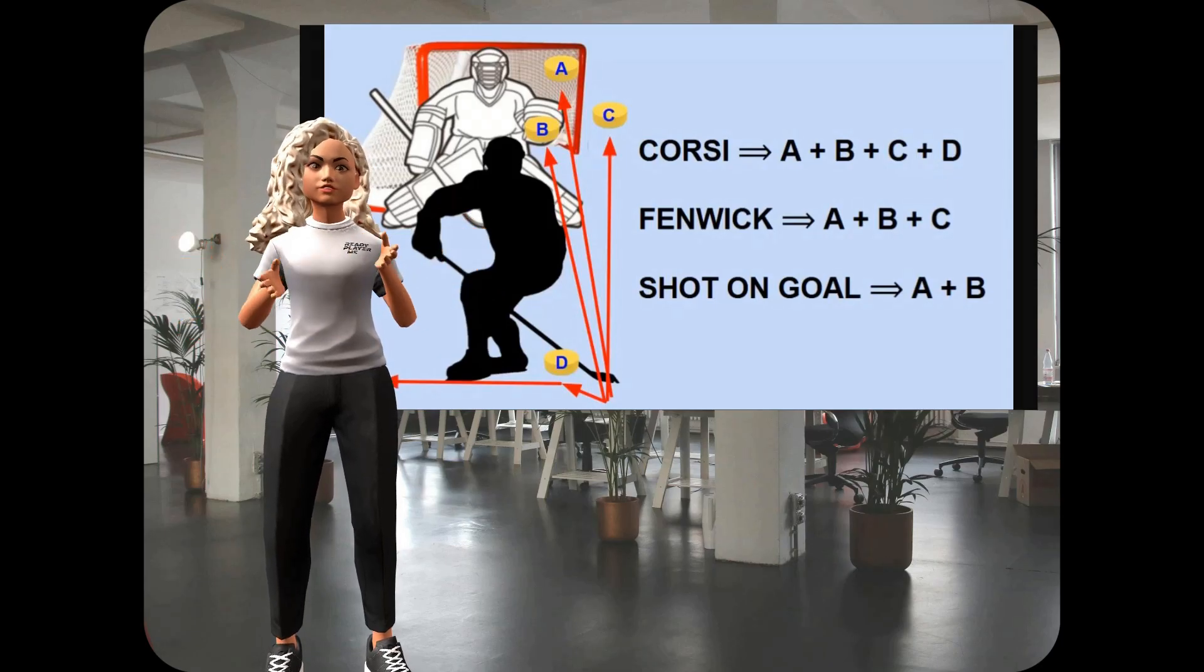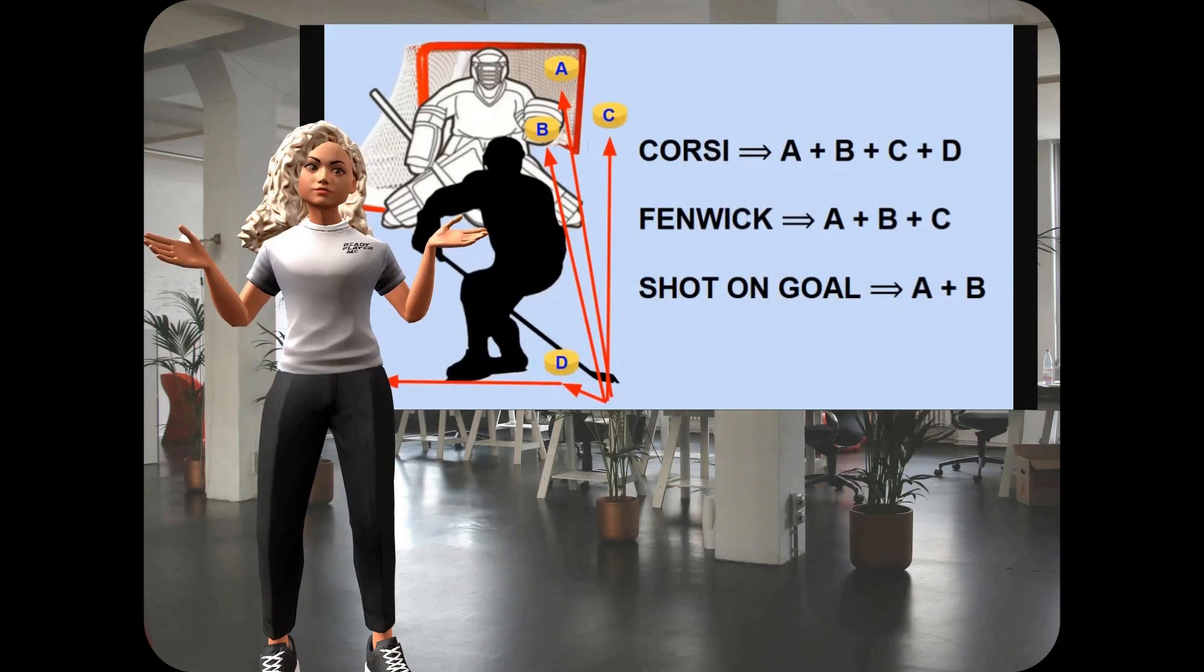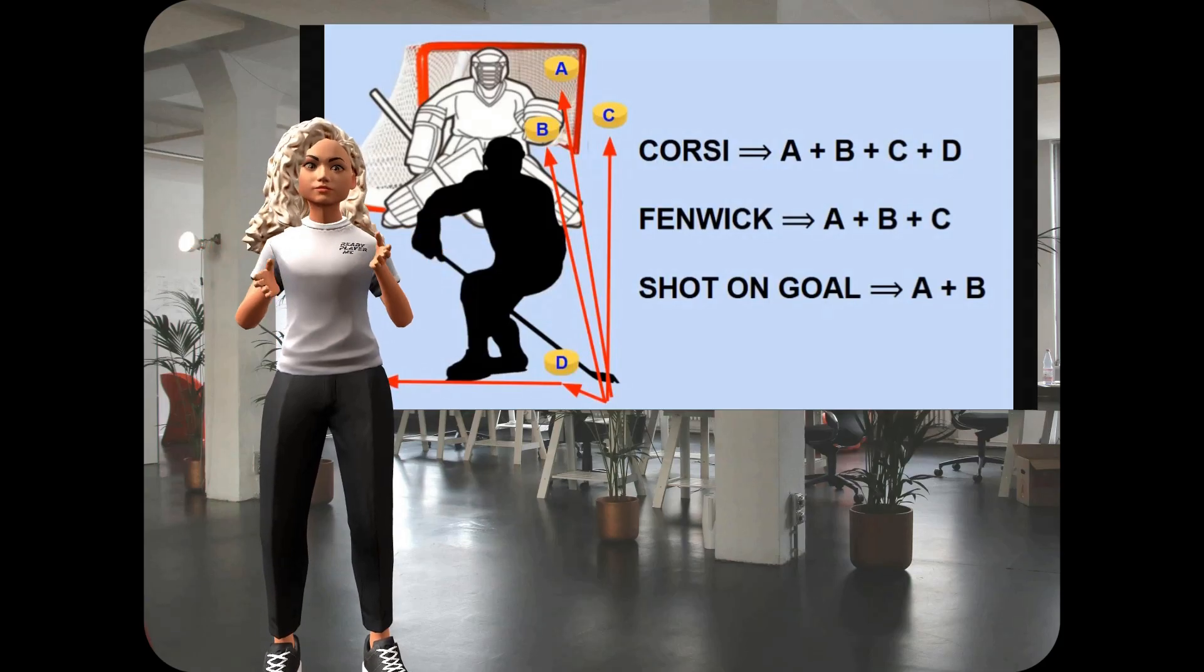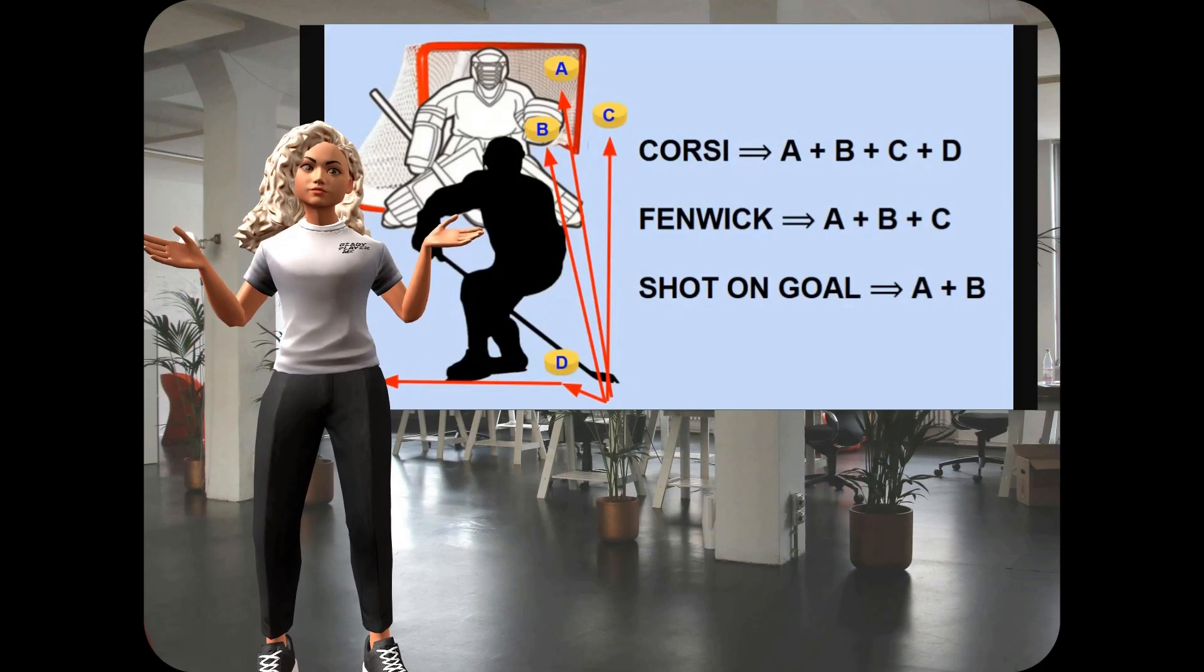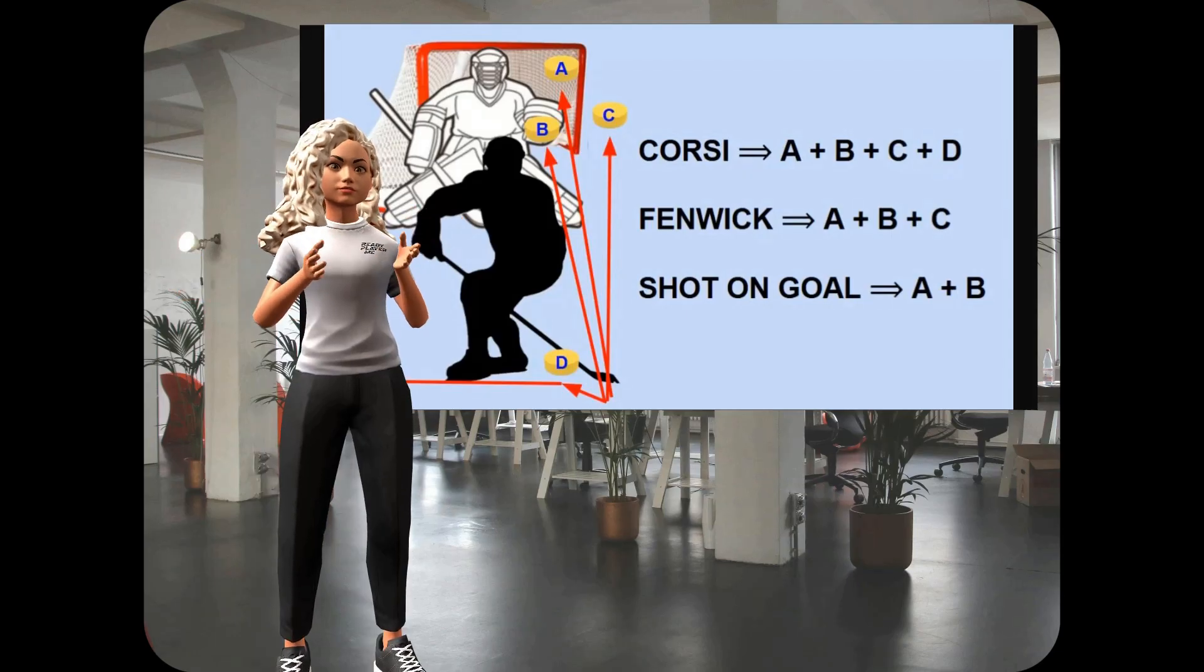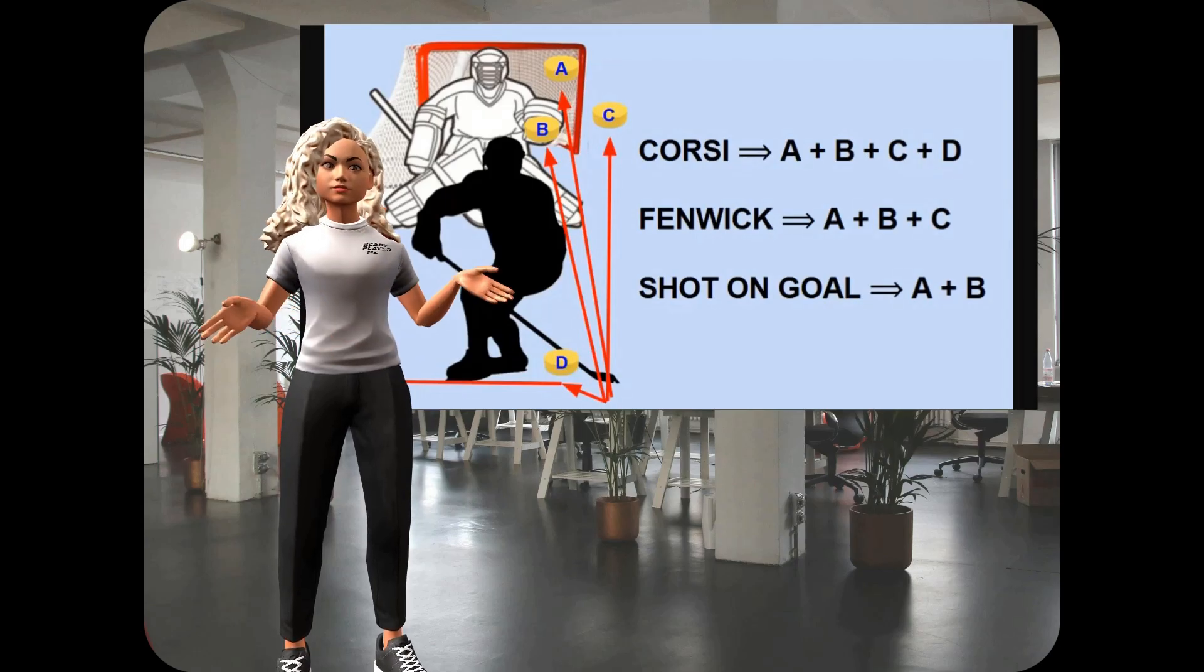And a lot of times, Corsi is taken as a proxy, because there's no other really good stat to fill in for it, as a proxy for puck possession. The team that has the opportunity to take more shots on goal, or attempted shots on goal, is the team that plays with the puck more. So, whichever team has the higher Corsi number is the team that has dominated play, whether that's by a little or by a lot.